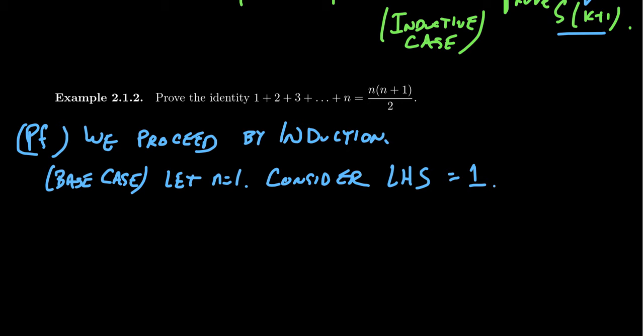On the other hand, if we consider the right-hand side of this equation, you're going to end up with 1 times (1+1) over 2, which equals 1 times 2 over 2. The 2s cancel and you're left with just a 1. And so you can see that equality holds in this situation and thus the base case holds.